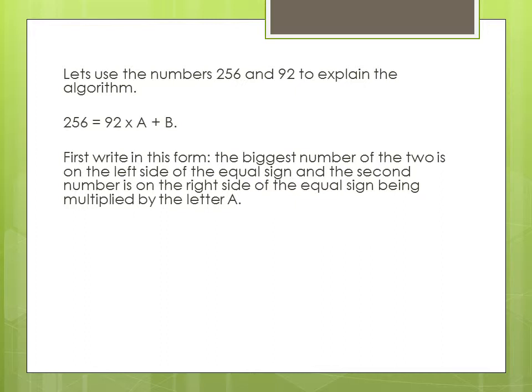Where we take the greatest of the given two numbers and place it on the left side of the equal sign and the second number on the right side of the equal sign multiplying the letter a, where a and b are positive integers.